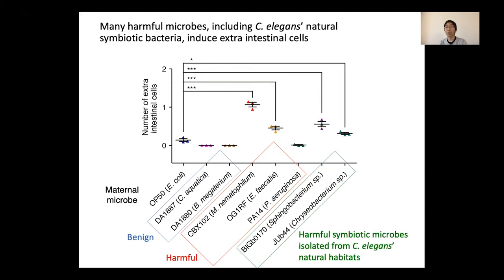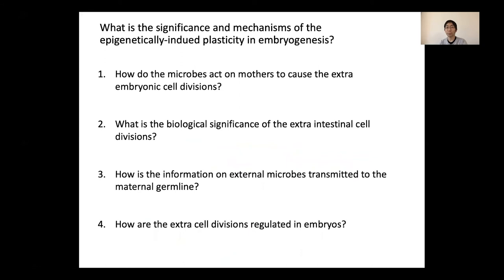Extra intestinal cells were also caused by these bacteria species, both of which are C. elegans' natural symbiotic microbes. The developmental plasticity described here is likely to occur also in C. elegans' natural habitat. Since this developmental plasticity induced by maternal microbes is a newly discovered phenomenon, many questions remain to be answered.